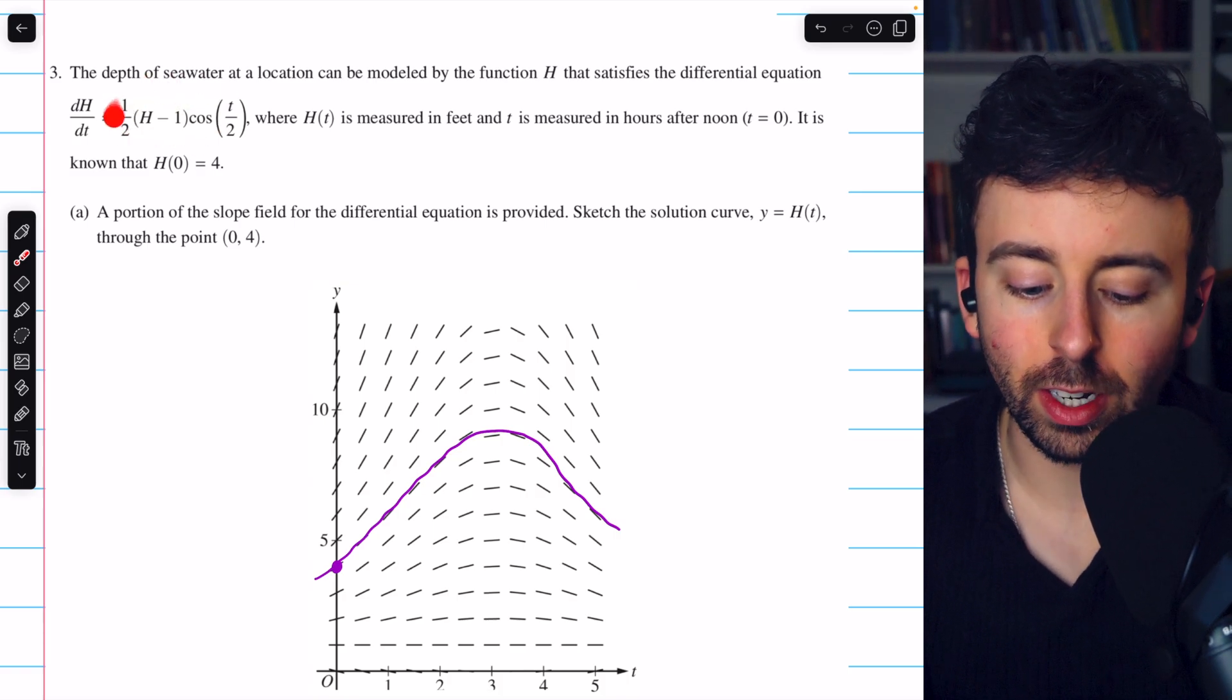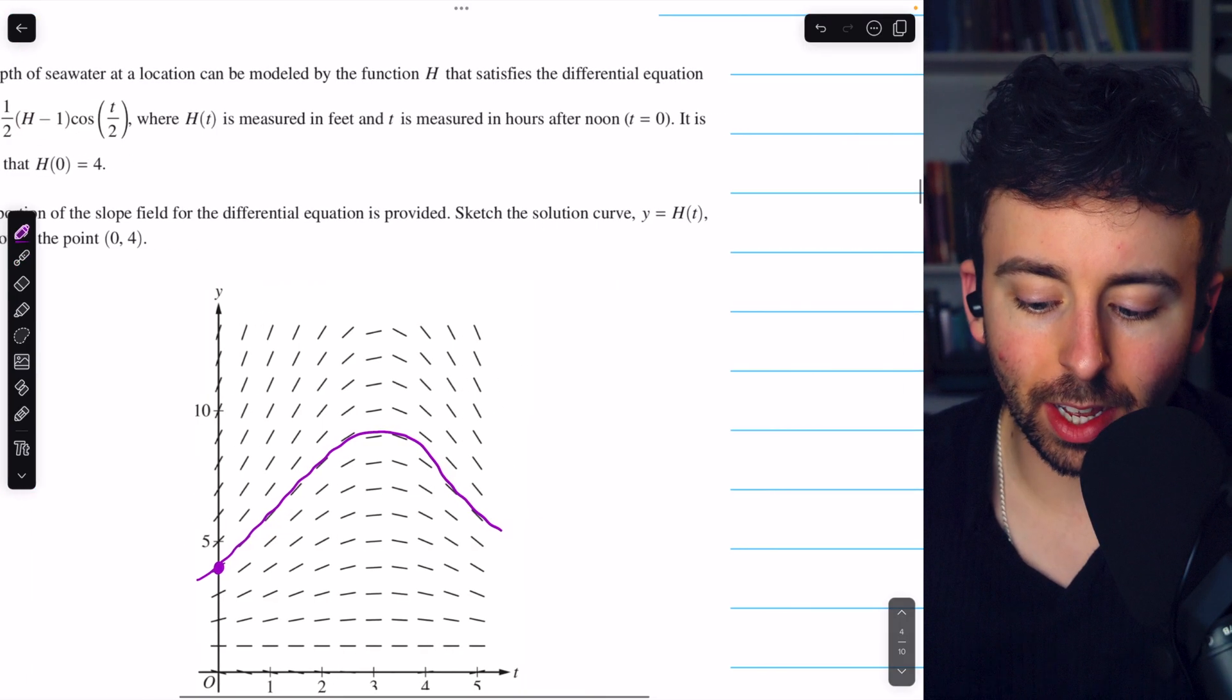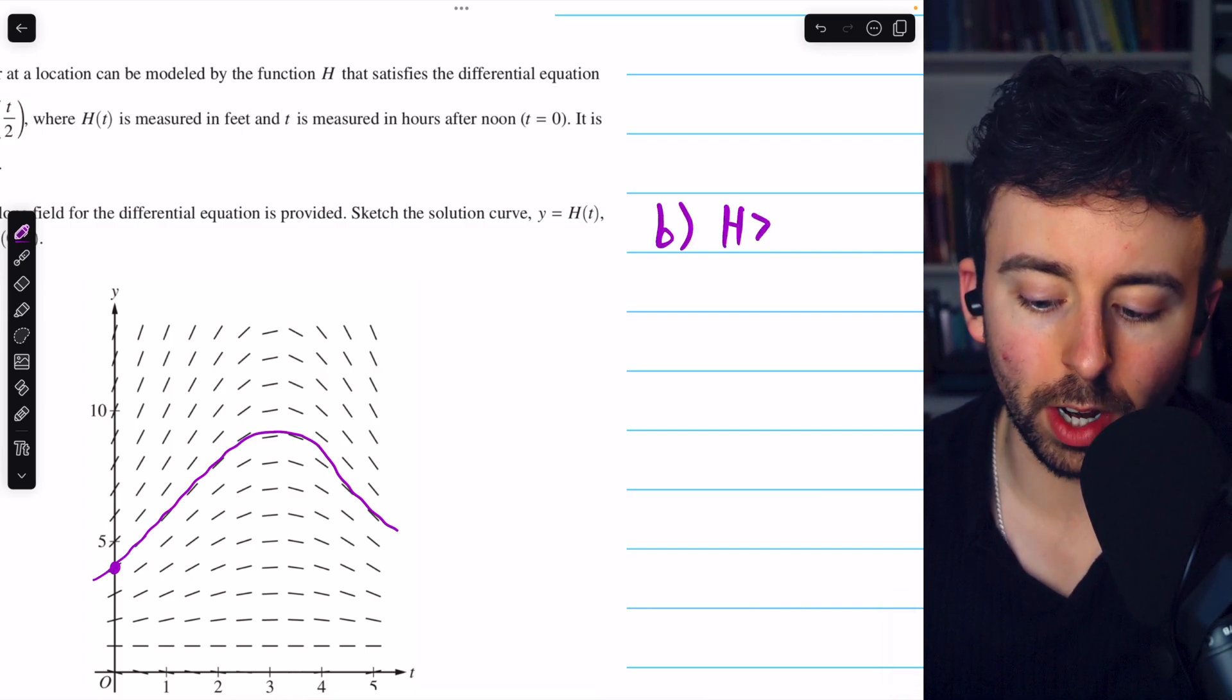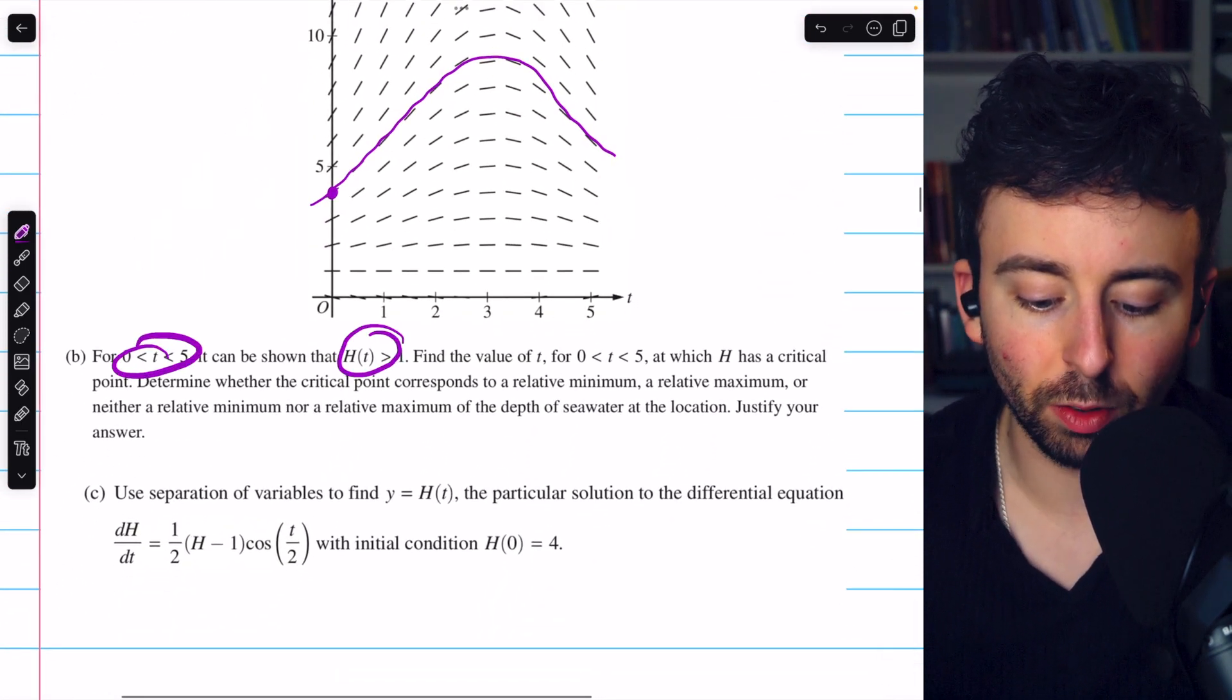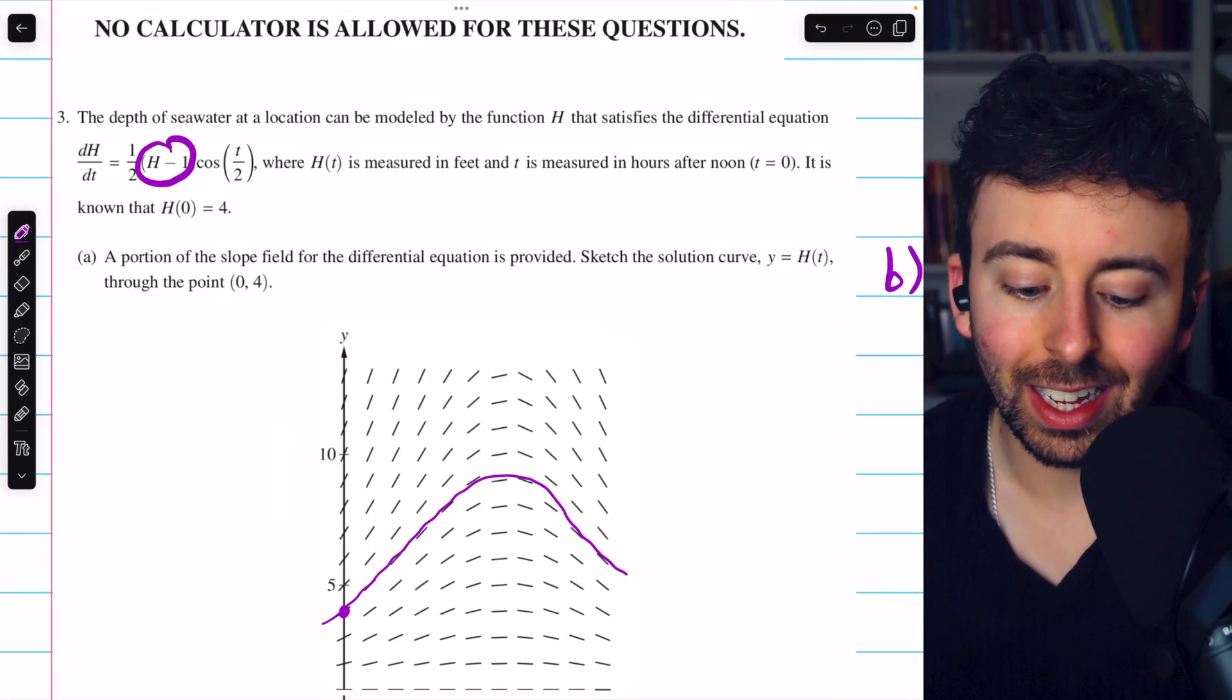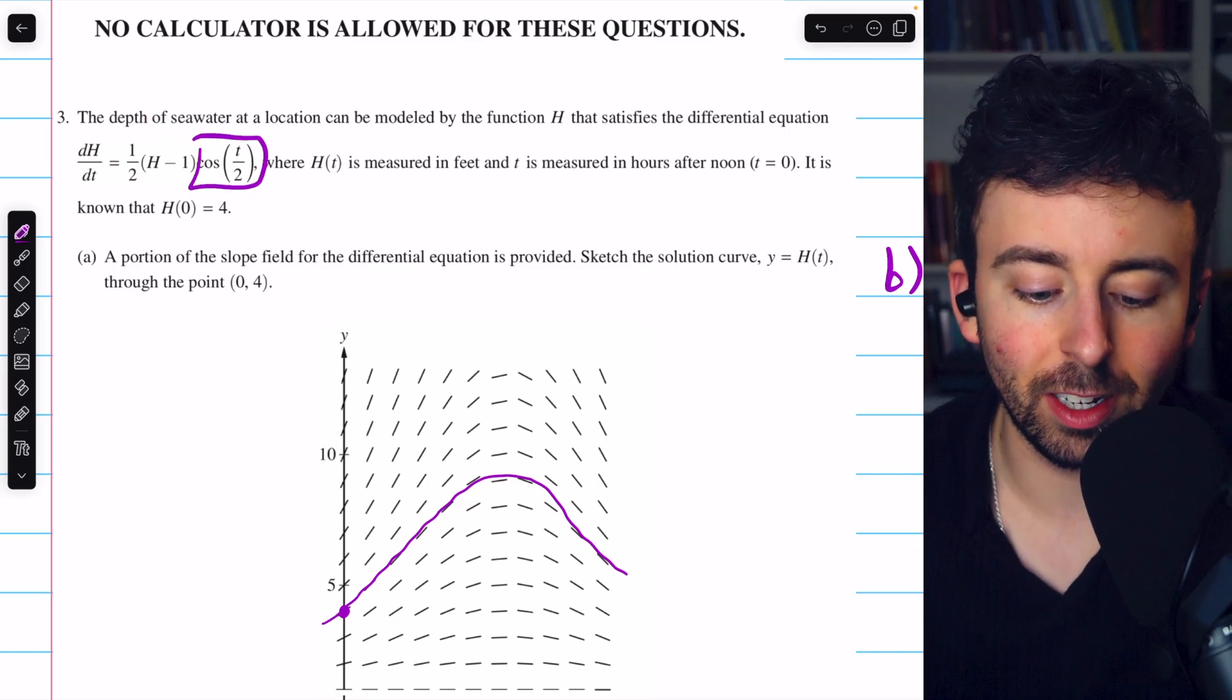When is this expression equal to zero? Well, h minus one is certainly never equal to zero, because it was given to us that h is greater than one, at least on the relevant interval, which is between zero and five. h(t) is greater than one. So h minus one cannot be zero. Thus, the only way this derivative will be zero, and thus we get a critical point, is if cosine is zero.